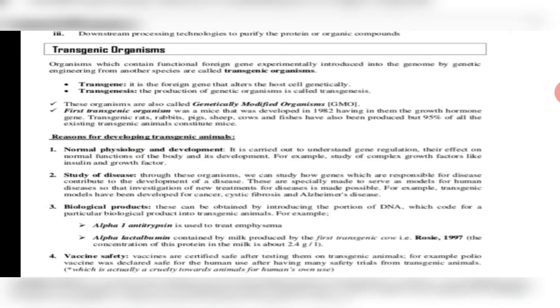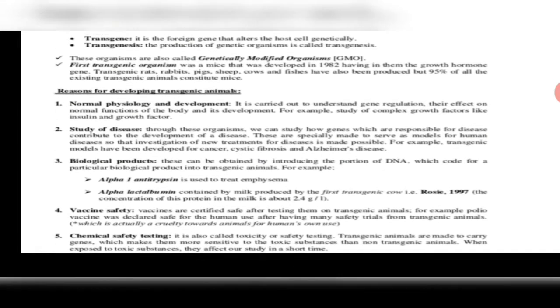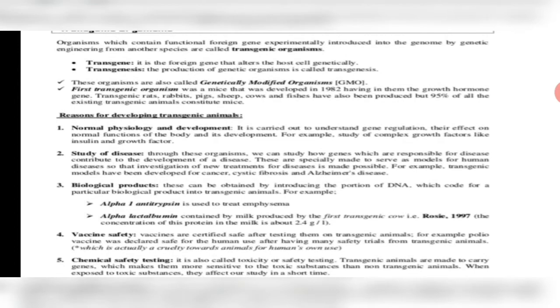The first transgenic organism that was formed was a mouse, developed in the year 1982 — quite recent. The growth hormone gene was manipulated. After that, transgenic rats, pigs, rabbits, sheep, cows, and fishes have been developed.